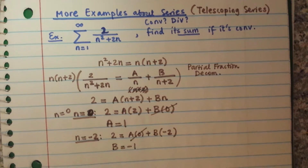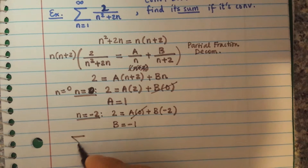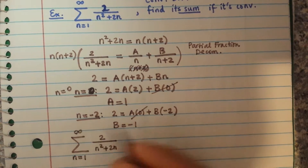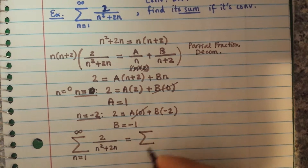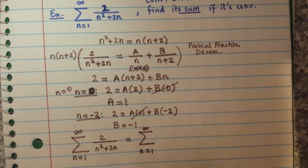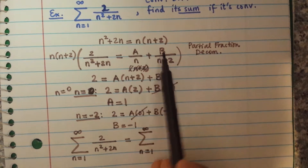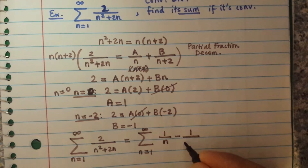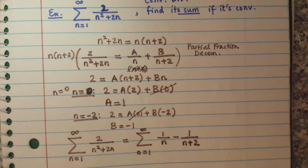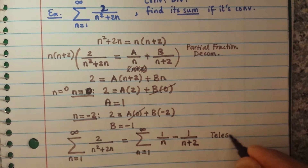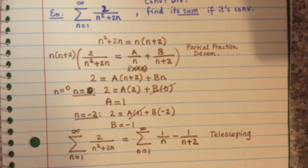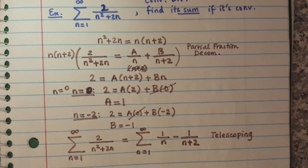So our actual series, the sum of 2 over n squared plus 2n from n equals 1 to infinity, can be written as the sum from n equals 1 to infinity of 1 over n minus 1 over (n plus 2). By this way, you can see this is really a telescoping series. In a telescoping series, you find the partial sum Sn.